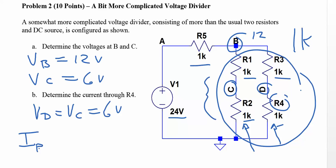So I in R4 will be 6 divided by 1k, or 6 milliamps.